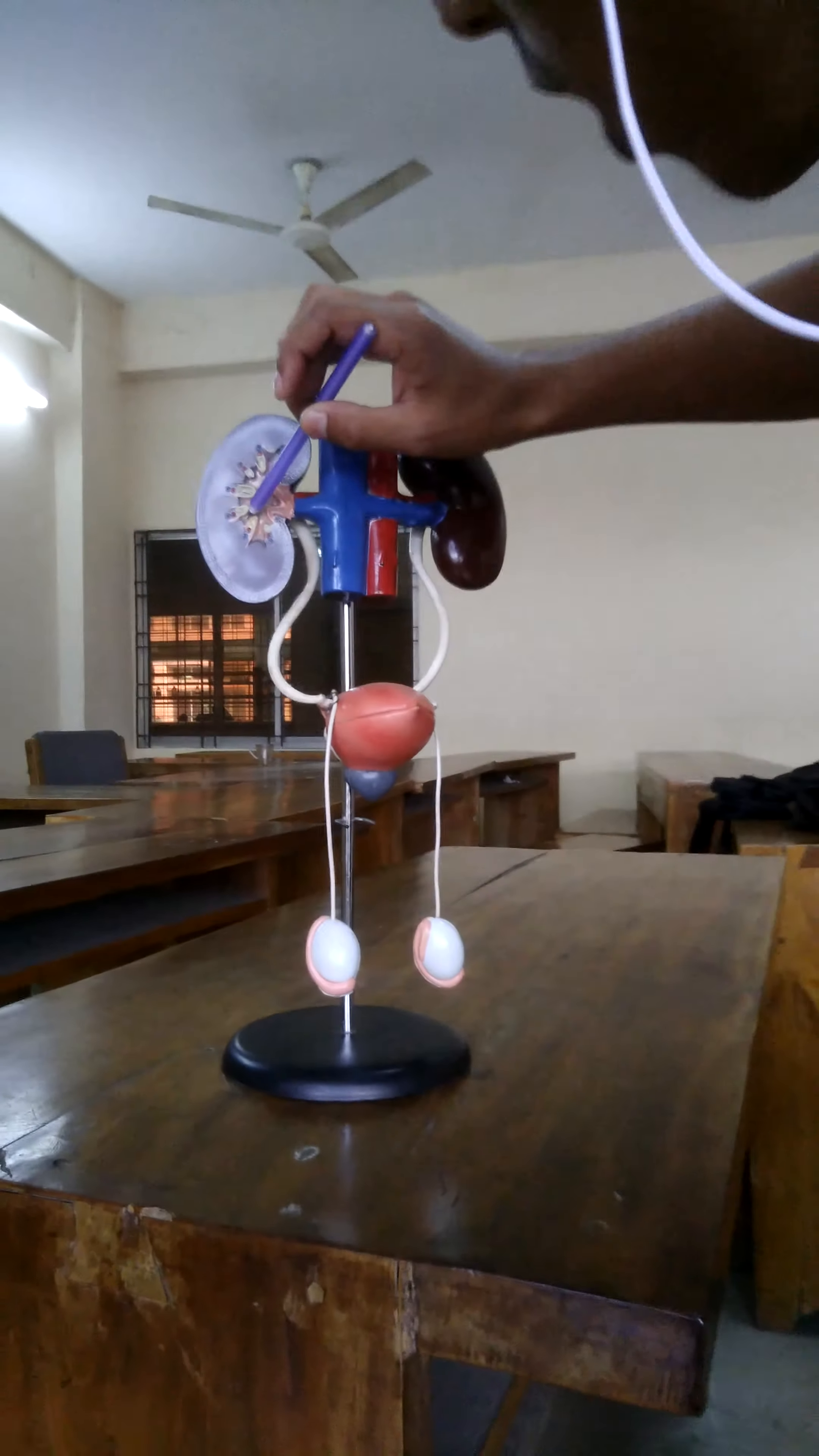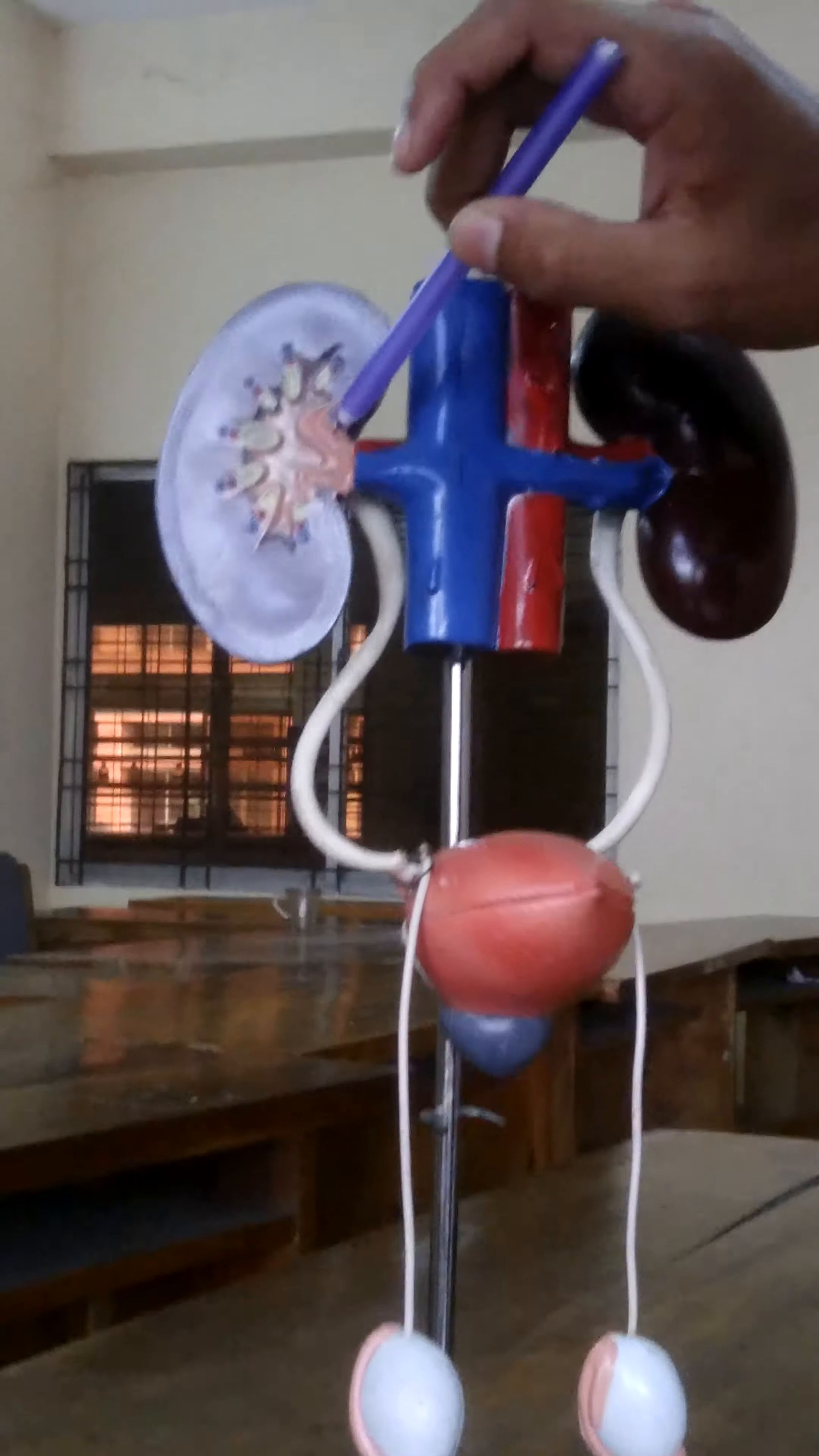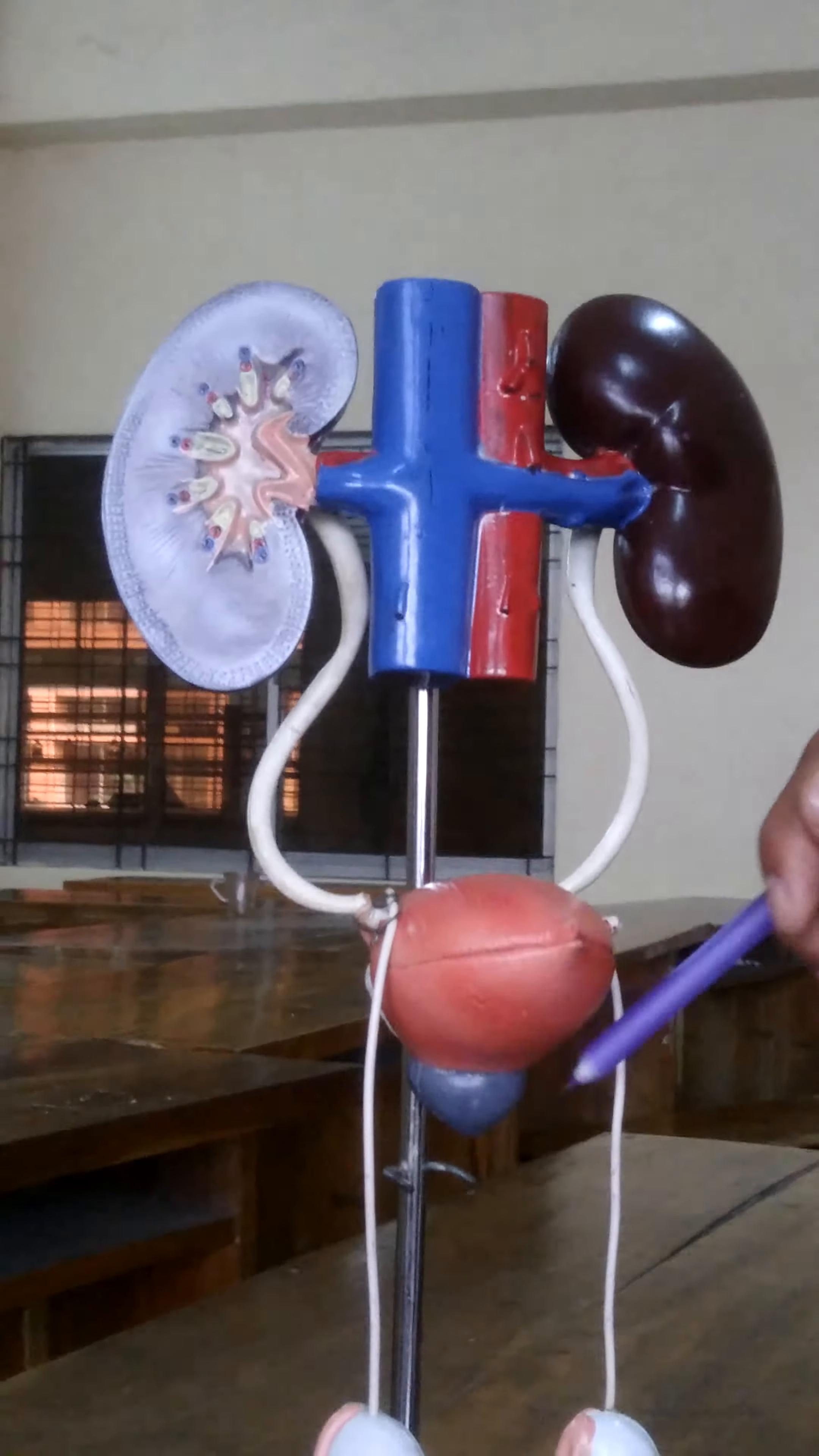These are the renal columns and these are the pyramids, major calyx, minor calyx, and then next is urinary bladder.